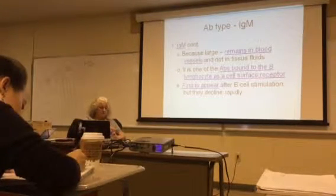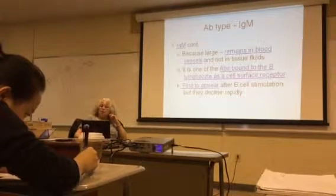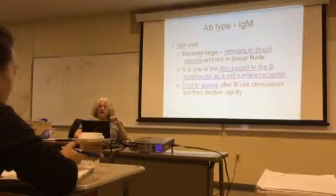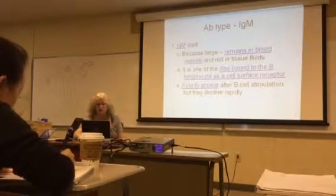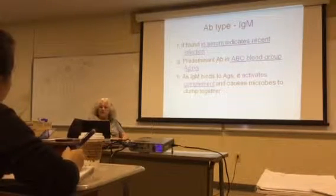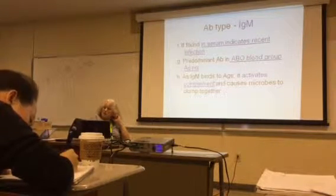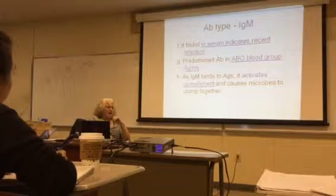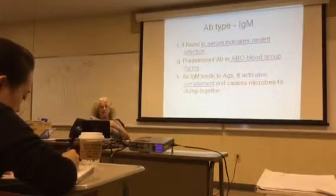Because IgM molecules are so big, they don't leave the blood vessels and are not found in the tissue fluid. IgM is one of the antibodies bound to the B lymphocyte as a cell surface receptor. It is the first antibody to appear after B cell stimulation, but it doesn't last very long and declines pretty quickly. If a blood test shows IgM antibodies in the blood, it indicates a recent infection. It is the predominant antibody in the ABO blood group antigen reaction. As IgM binds to an antigen, it also activates complement — those proteins that float around in your blood — causing microbes to clump together.